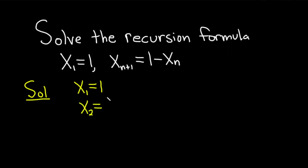So to figure out x sub 2, we basically have to look here. This is going to take the place of our n plus 1. So if n plus 1 is equal to 2, that means n is equal to 1. So this is basically 1 minus x sub 1. But x sub 1 is 1, so it's just 1 minus 1, so it's 0.